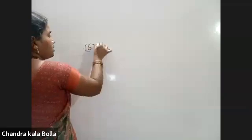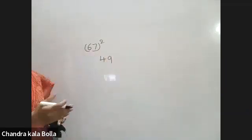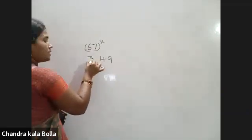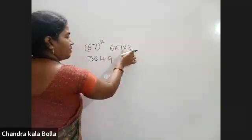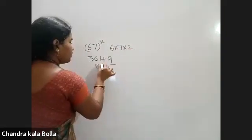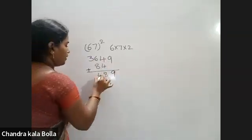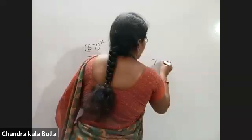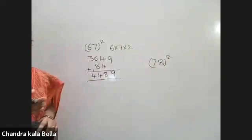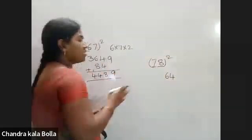Next example: 67 whole square. 7 squared value is 49. Next, 6 squared value is 36. Next, 6 into 7 into 2 is 84. Ones place: carry 9. So 4 plus 4 is 8, plus 6 is 14. Then 8 plus 6 is 14. Answer is 4489.